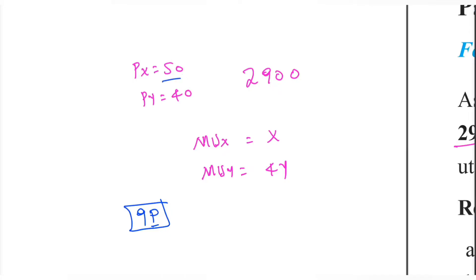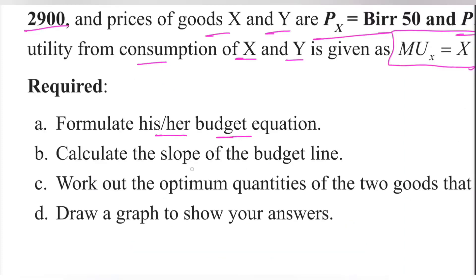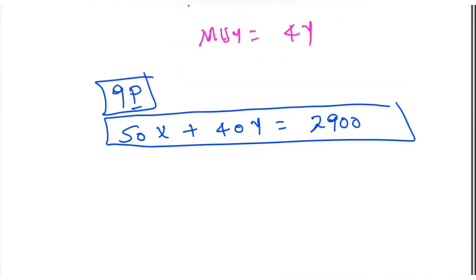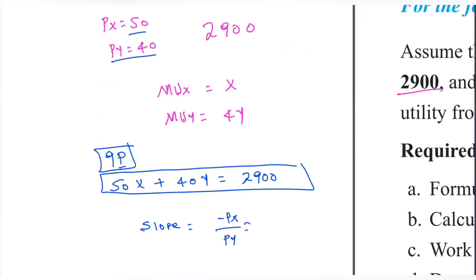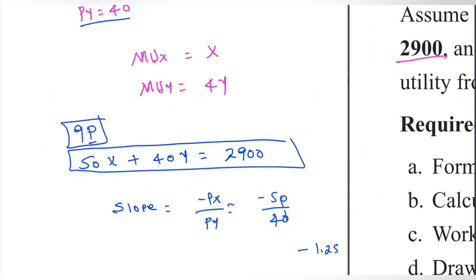Price of x and quantity of x are set. Now calculate the slope of the budget line. The slope of the budget line is negative price of x over price of y, which is negative 5 over 4. This gives a downward sloping budget line.